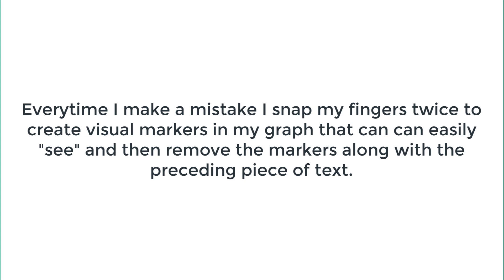When I have finished recording, all I have to do is just visually locate the tall lines, which are basically my mistake markers, in my entire recording and remove the piece of text right before the tall lines, along with the lines themselves. I don't have to listen back to the entire recording to find out my mistakes and remove them. I just need to locate the markers and remove the piece of text right before the markers.